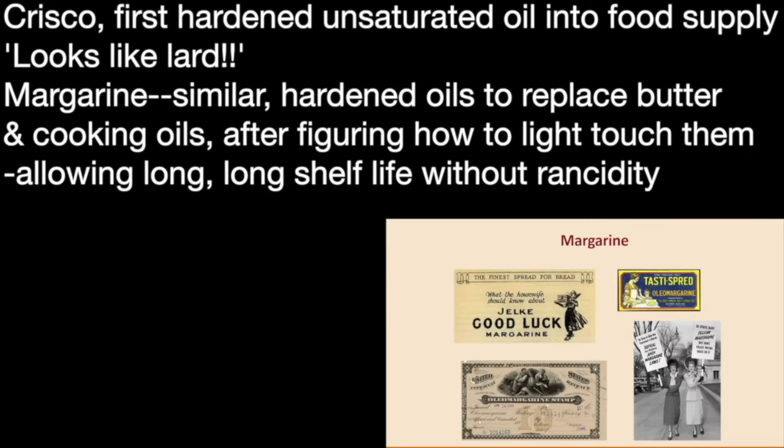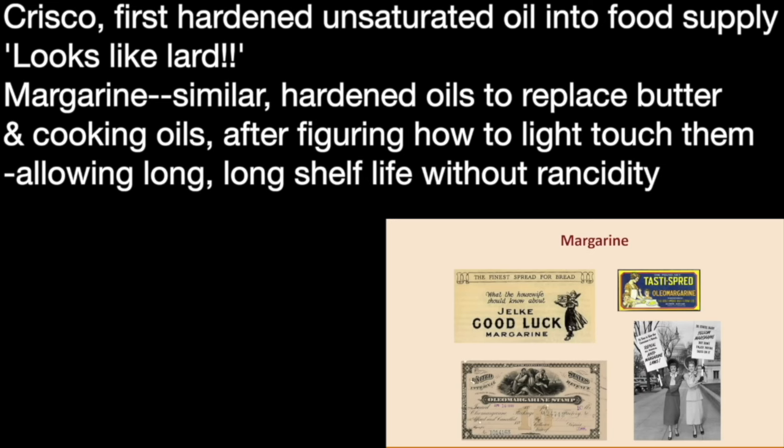Margarine was another hydrogenated product, very similar to Crisco. It was meant to replace butter, and it eventually did in large part. Then eventually we got plain old cooking oils when they figured out how to do a very light-touch form of hydrogenation that allowed vegetable oils to sit on the shelf and not become rancid.